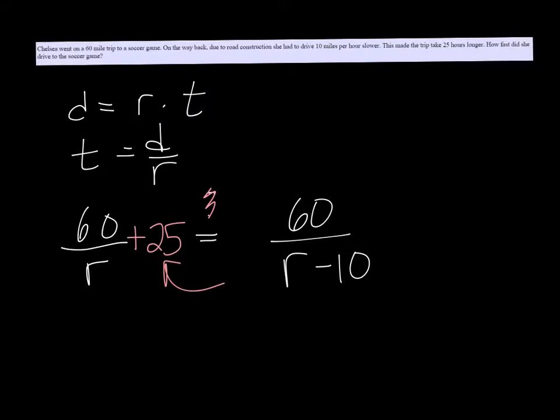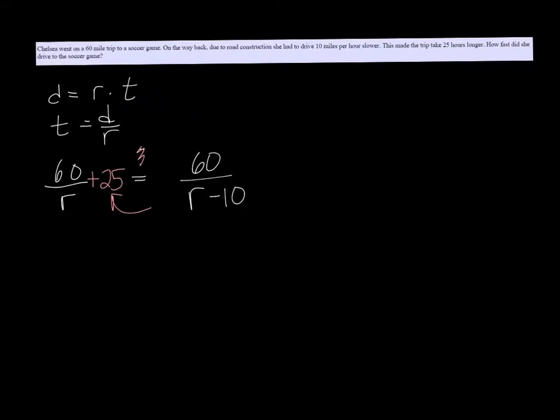So now we just have to solve the quadratic, or rational equation. You will want to get the variables out of the denominator by multiplying both sides by r and r minus 10, or r times r minus 10.